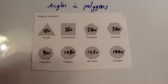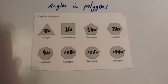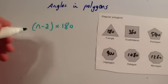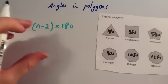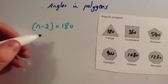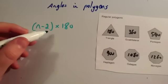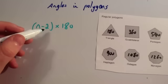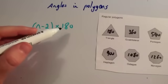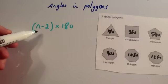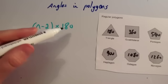There is another way to work that out, and that's by using the formula. To find the sum of the interior angles — what the angles inside the shape add up to — use the formula: (n − 2) × 180, where n is the number of sides. So you take 2 off the number of sides, and then multiply by 180.